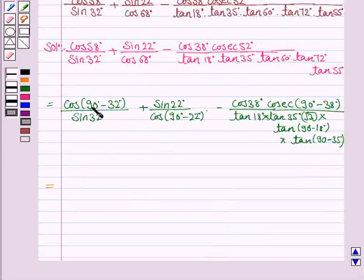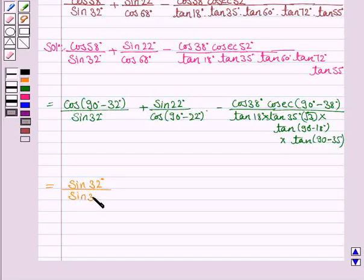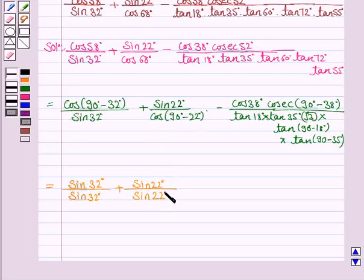Now, cos(90° − θ) = sin θ. So the first term becomes sin 32° / sin 32°, the second term becomes sin 22° / sin 22°. For the cosec term, cosec(90° − θ) = sec θ, so cosec 52° becomes sec 38°.